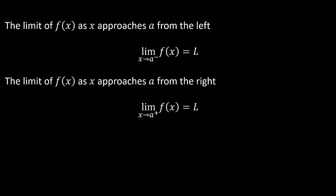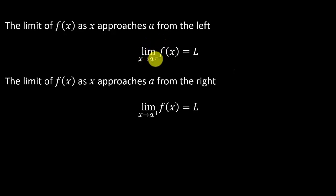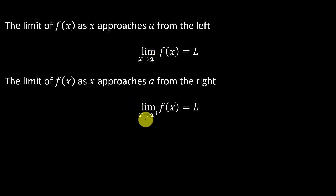So the first thing I want to do before we get started is just the notation. This is the limit as x approaches a, and the little minus sign here means that we're approaching a from the left. And this one, the limit of f of x as x approaches a, and this little plus sign here means that we're approaching from the right.